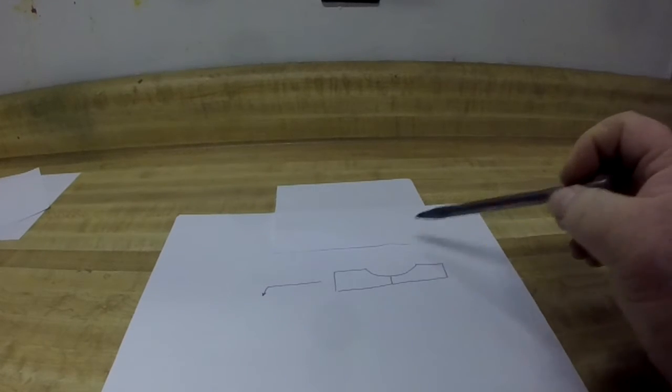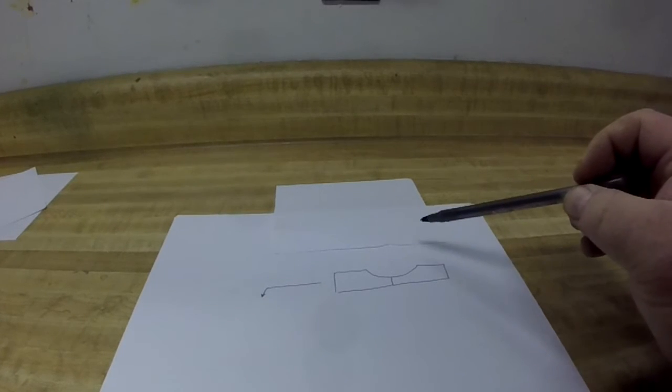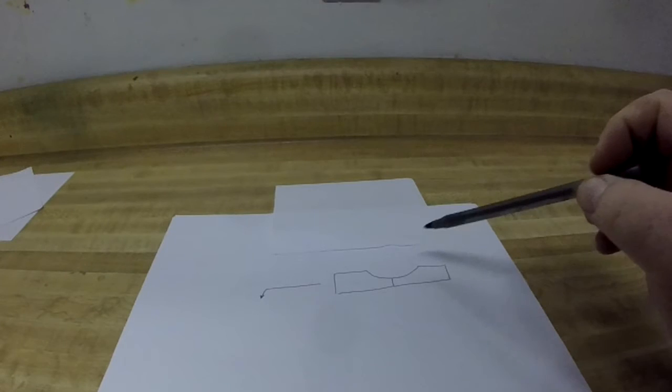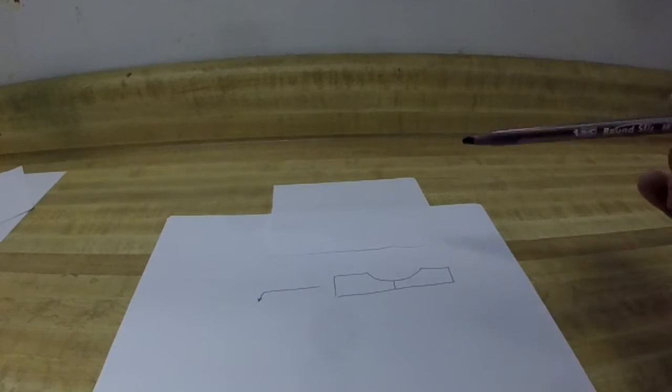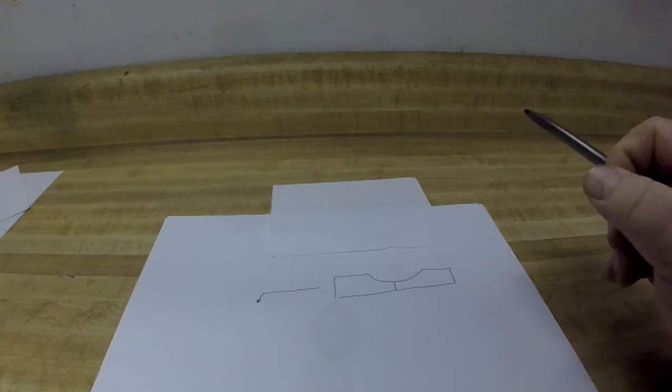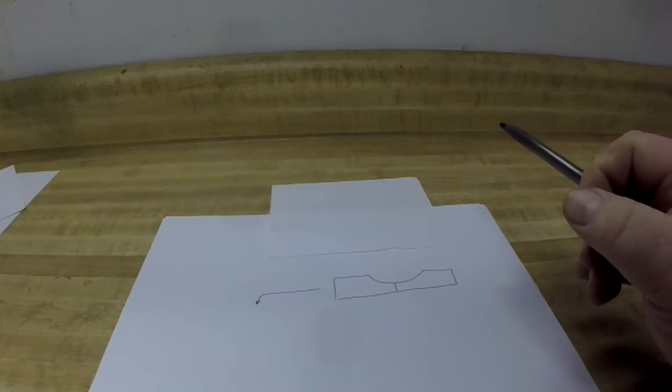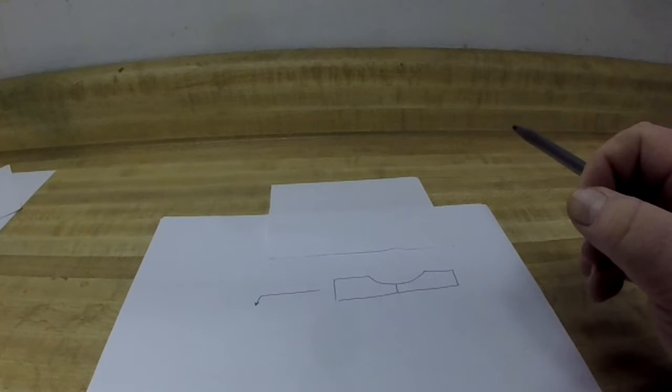Now our joints are going to get just a little bit more complicated, but you're going to notice that the symbols are still going to look remarkably like the joints themselves, making it easy for dumb welders like us to figure out what the hell we're supposed to do.